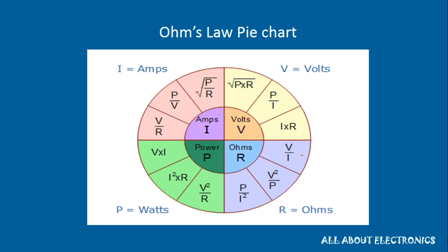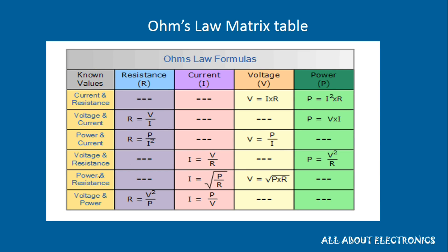Let's see this pie chart which shows all the possible relationships between voltage, current, power, and resistance. If we know any two parameters, we can find the remaining two. For example, if we know current and power, then voltage V = P/I and resistance R = P/I². Or if we know power and resistance, current = √(P/R) and voltage = √(P × R).